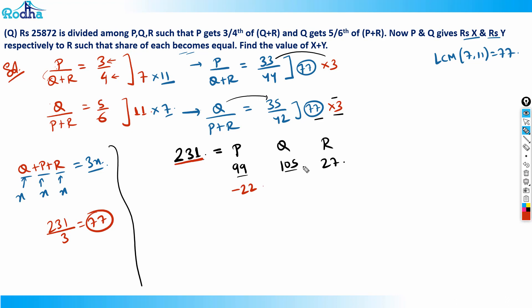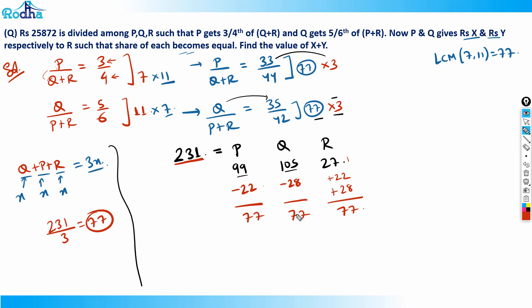Q must give away 105 minus 77 equals 28 to R. So after the transfers, P is 77, Q is 77, and R also becomes 77 — total still 231. Everything checks out.